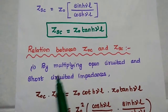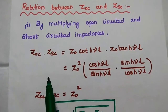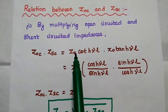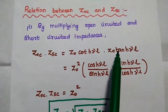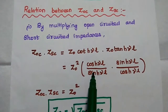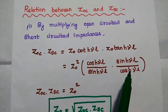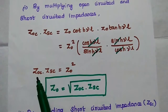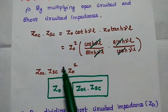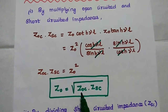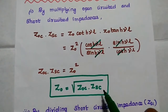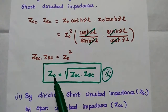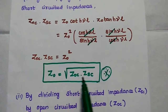After getting the short circuited impedance and open circuited impedance, we are going to relate these two. The first relation: by multiplying the open circuited and short circuited impedances, Z_OC equals Z0·coth(γL) and Z_SC equals Z0·tanh(γL). Writing coth as cosh(γL) over sinh(γL) and tanh as sinh(γL) over cosh(γL), these terms cancel. Finally we get Z_OC times Z_SC equals Z0 squared. From this, we can get the characteristic impedance Z0 equal to the square root of Z_OC multiplied by Z_SC. This is a very important formula that we can use to solve problems.